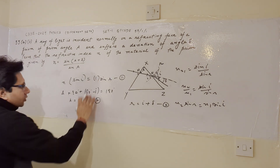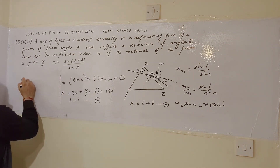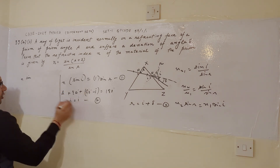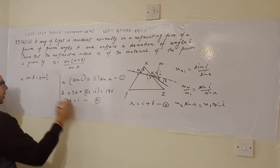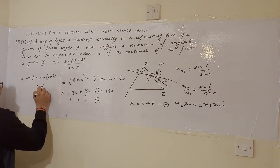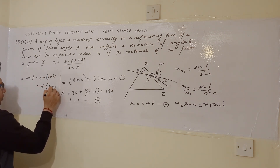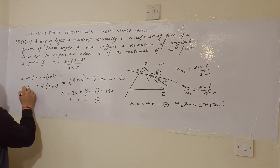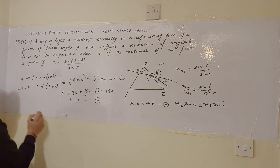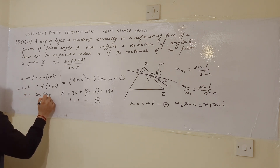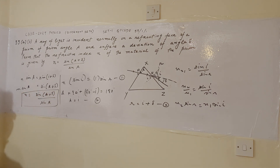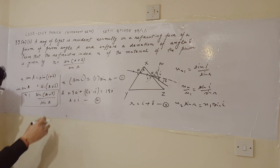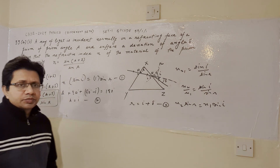Combining all three equations: from equation one, n sin(i) = sin(r); substituting equation two (i = a) gives n sin(a) = sin(r); substituting equation three (r = a + delta) gives n sin(a) = sin(a + delta). Therefore, n = sin(a + delta) / sin(a). This is the required expression. Hope you understand the solution — thank you.